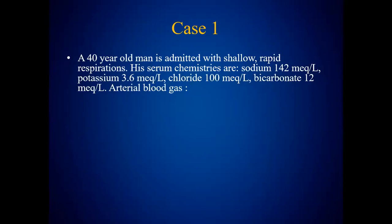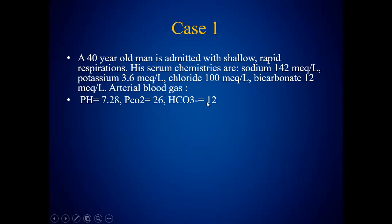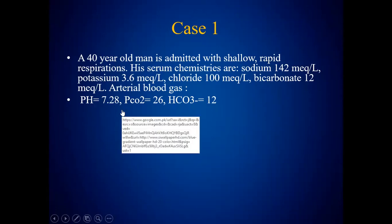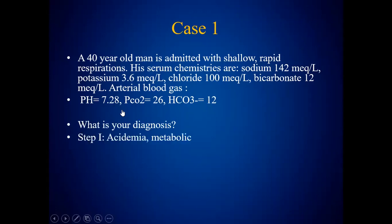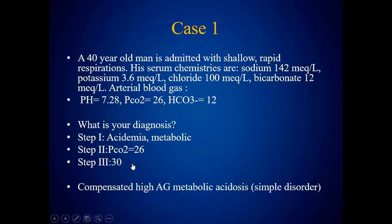A 40-year-old patient with shallow rapid respiration. His serum chemistries and arterial blood gas are as follows. Step one: look at the pH — acidemia. Bicarbonate of 12 favors that, so it's metabolic acidosis. Step two: calculate compensation using the formula — pCO2 should be 26, and the patient's pCO2 is 26, so it's appropriate compensation. Step three: calculate the anion gap — sodium minus chloride minus bicarbonate — it comes out to 30. So it's a compensated high anion gap metabolic acidosis — a simple acid-base disorder.